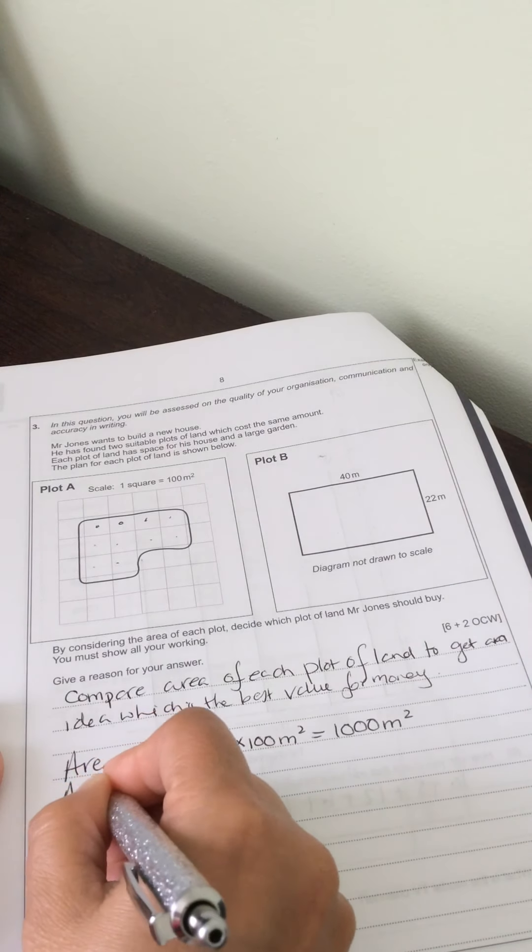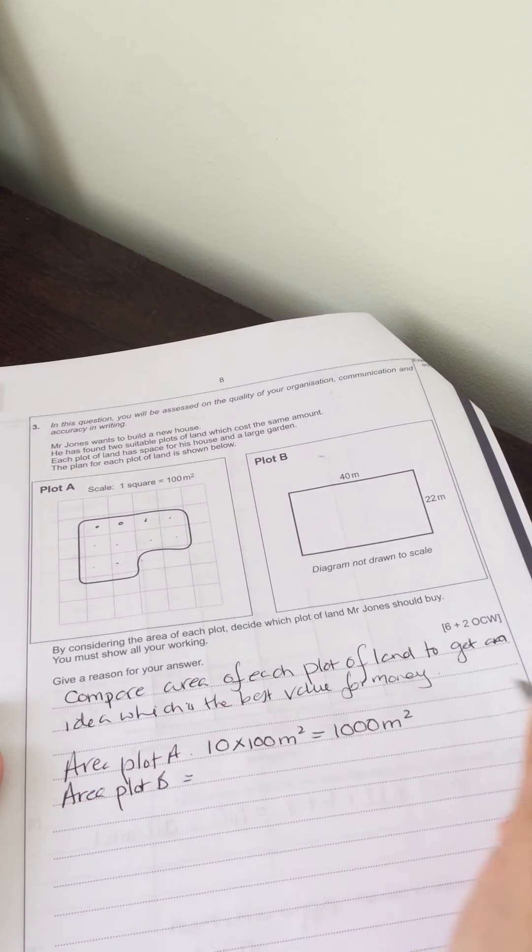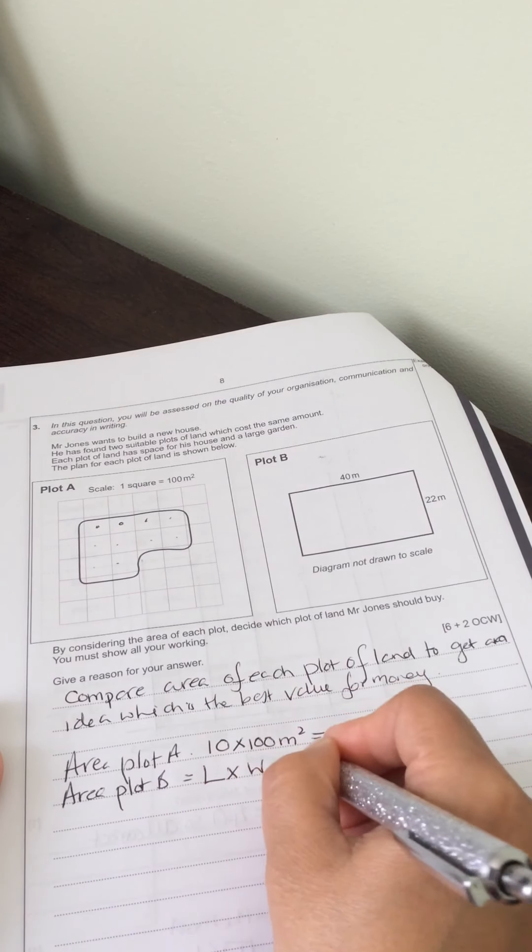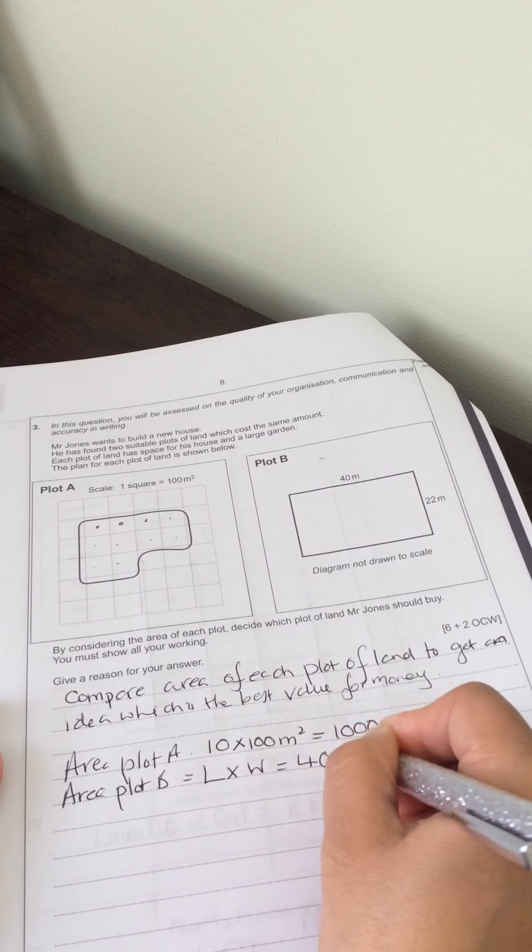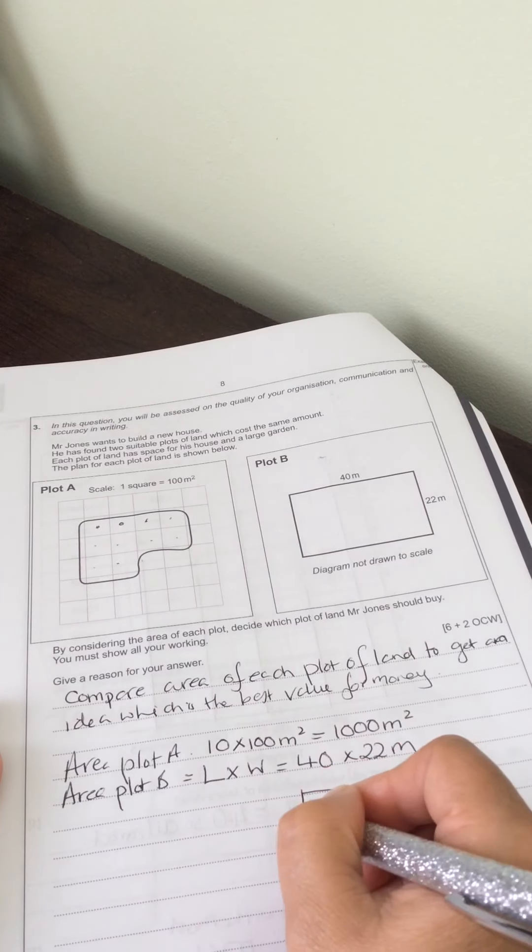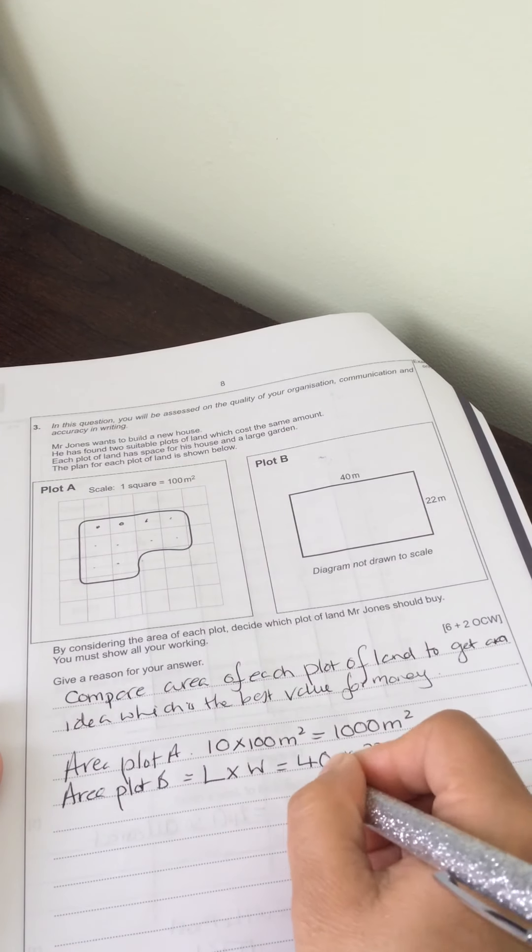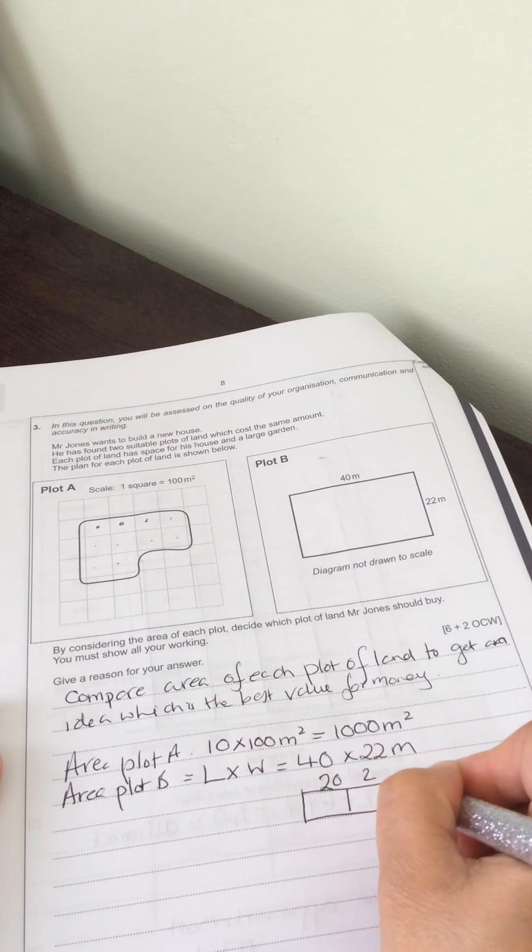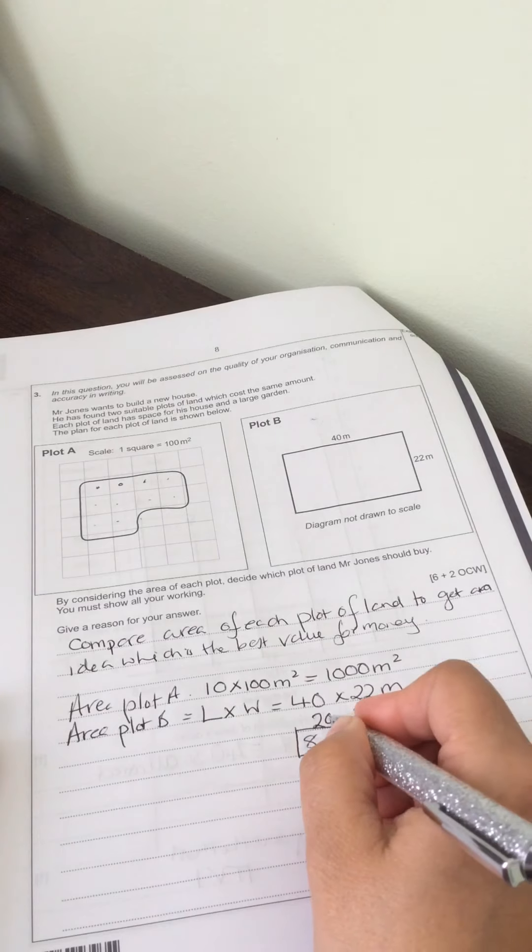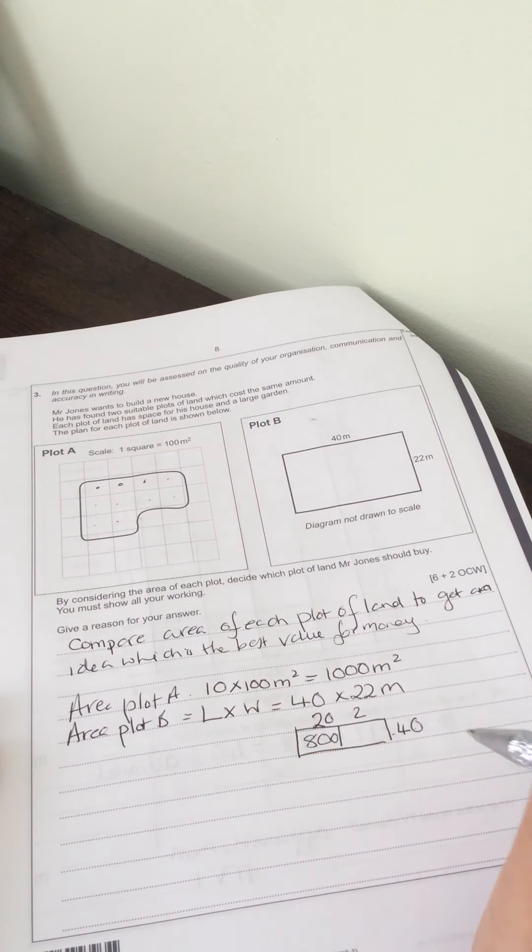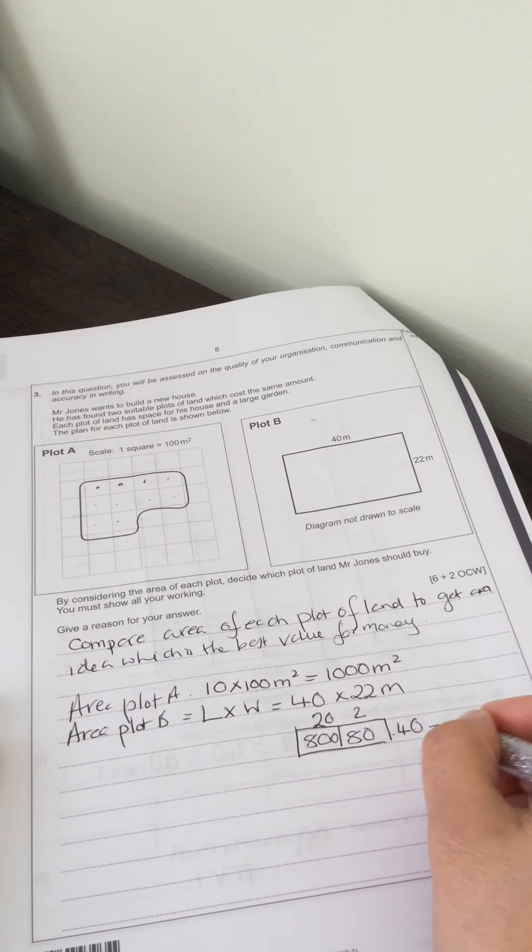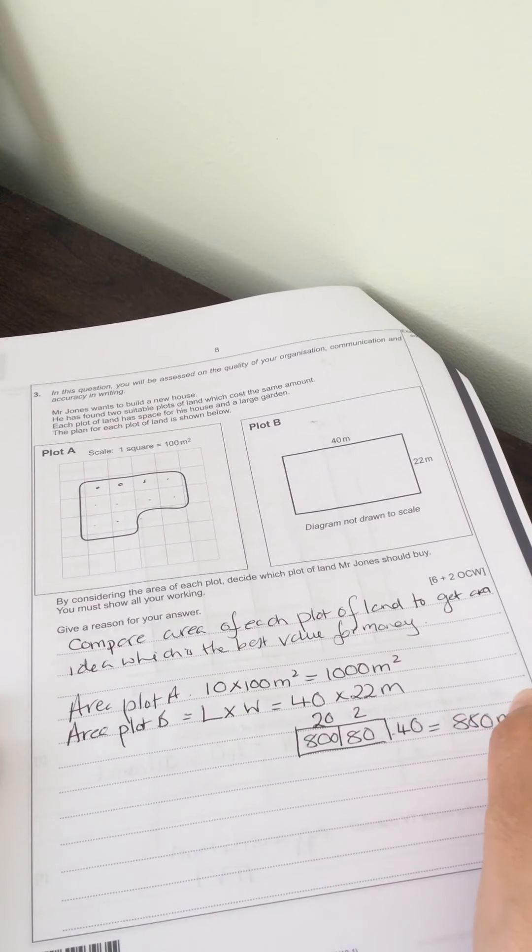For area for plot B, we're going to use the rule length times width. So that'll be 40 times 22. I'm going to use the grid method. So I'm going to have 20, 2 there and 40 here. 2 times 4 is 8. 0 and 0 in the question, so there's a 0, 0 in the answer. 2 times 4 is 8. So this one's got 880 metres squared.